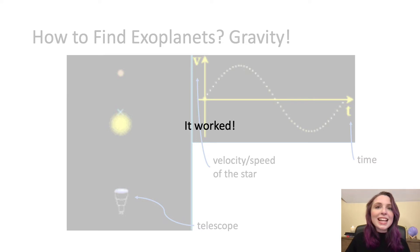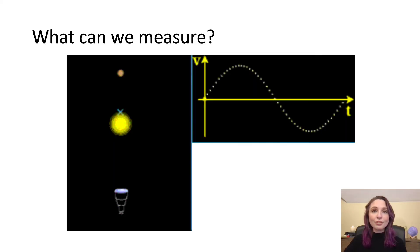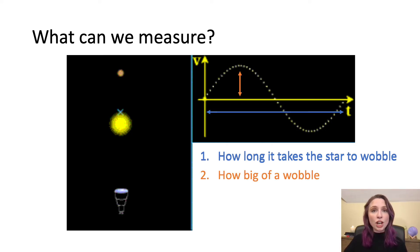But this method isn't only good for discovering exoplanets, it's also good for learning about them. Now if we go back to this graph, we know that the pattern of the star's movement tells us that there is an exoplanet there. But there are a few other things we can measure. We can measure how long it takes for the star to wobble, which is the same amount of time that it takes for the exoplanet to go around the star. We can also measure how big of a wobble the exoplanet is causing in its star.